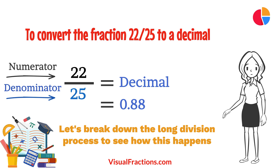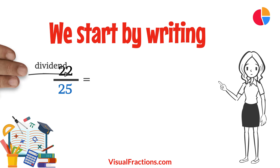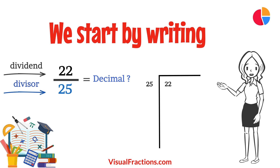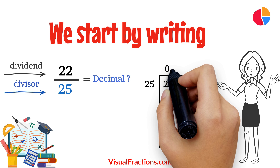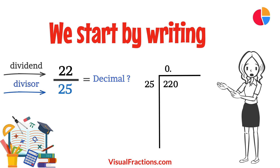The answer we get is 0.88. To do this by hand using long division, we start by writing 22 as the dividend and 25 as the divisor. Since 25 doesn't fit into 22, we add a decimal point in our answer and append a 0 to 22, making it 220.